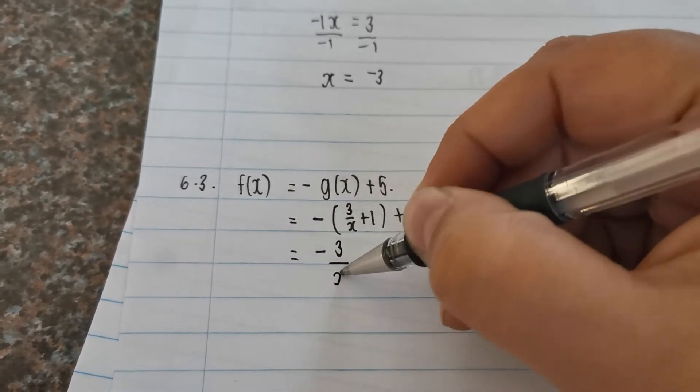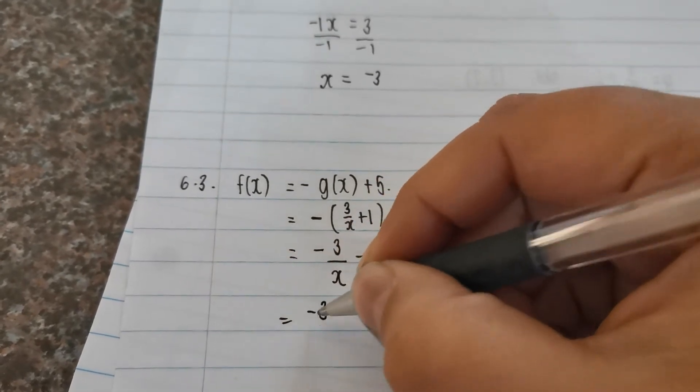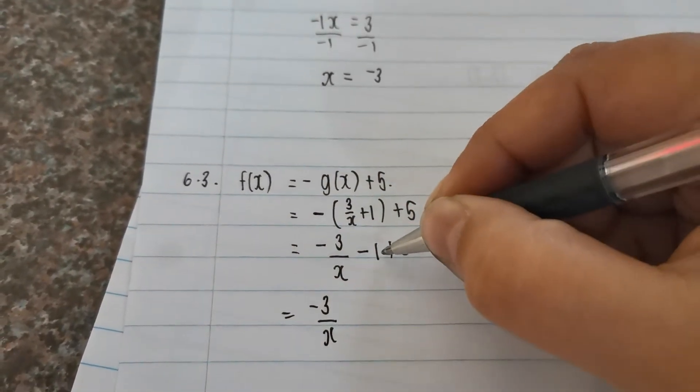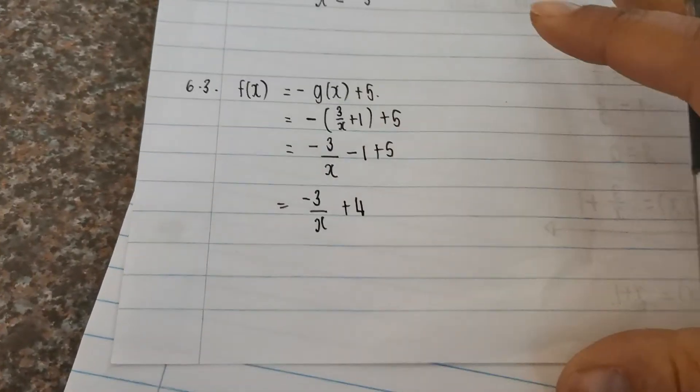negative 3 over x minus 1 plus 5, and this gives me negative 1 plus 5 is plus 4. So what's the equation of the asymptote?